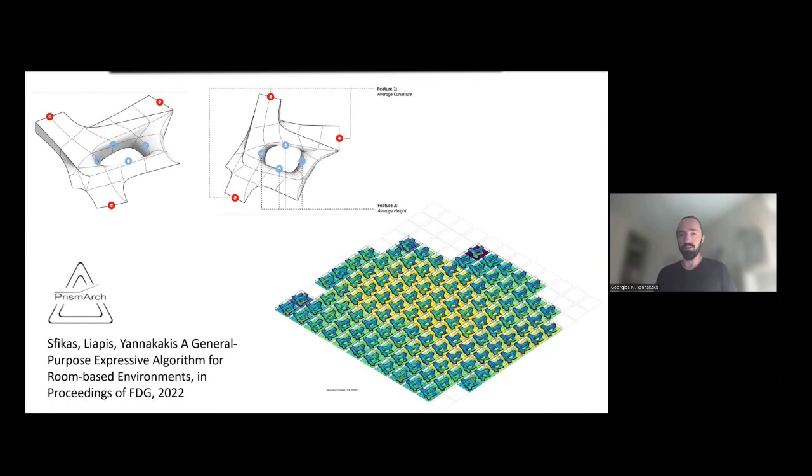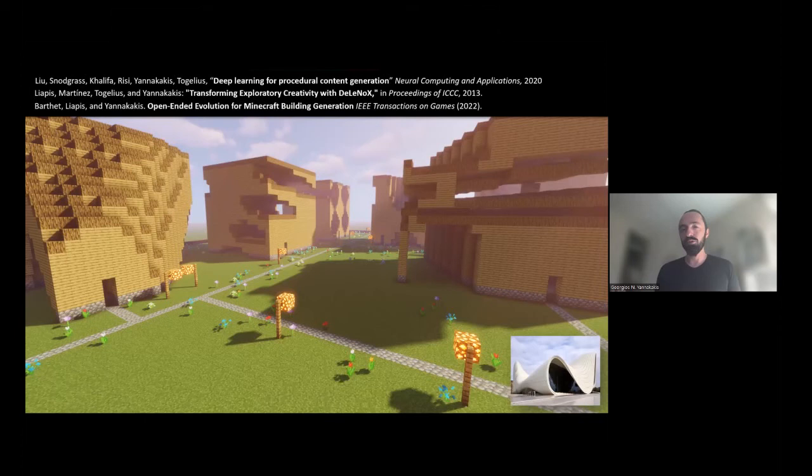Moving on, you can do cool things with Minecraft, for instance. You can use algorithms that combine evolutionary computation and deep learning to generate novel buildings in Minecraft that are feasible, they stand, they're structurally plausible, and they make sense, and they're novel. No human designer has ever thought about them.